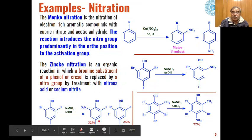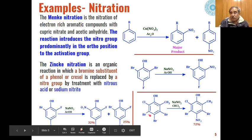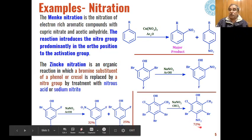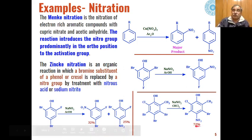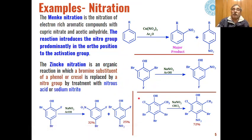In the second example, one product is formed in 32% yield and another in 25% yield. The fluoro group is not affected by this ipso-nitration. In a cresol system with a chloro group and three bromo groups, only the para-bromo is substituted by the nitro group, giving a product in 72% yield. These are important examples of nitration giving abnormal products compared to normal nitration.